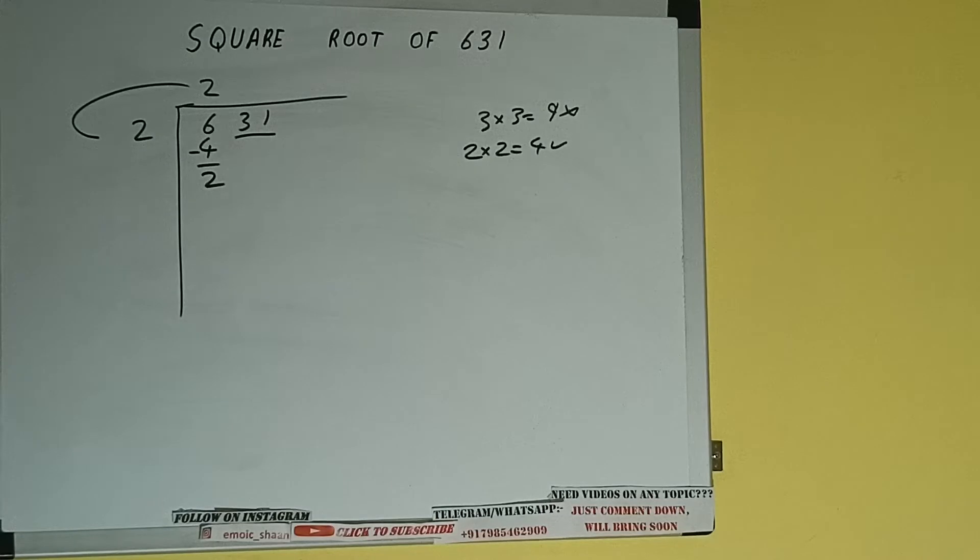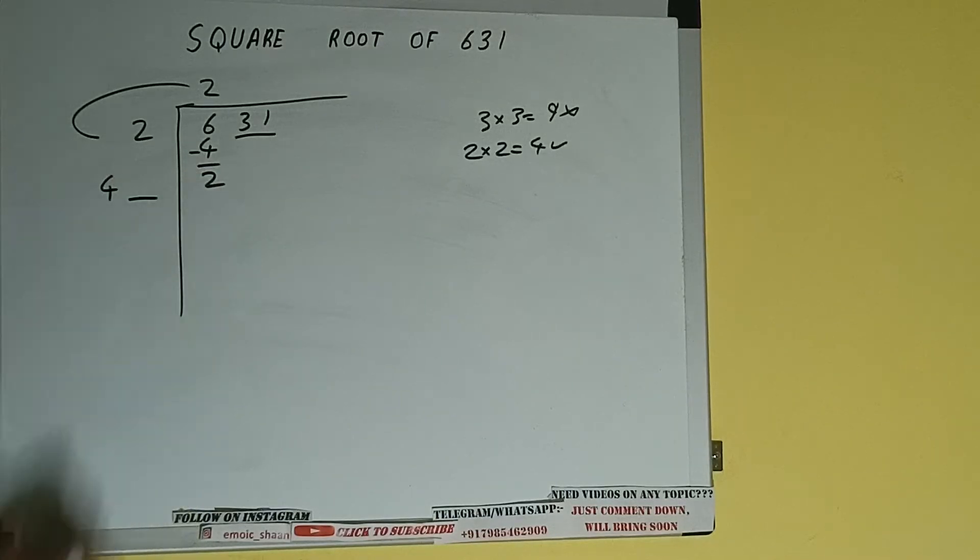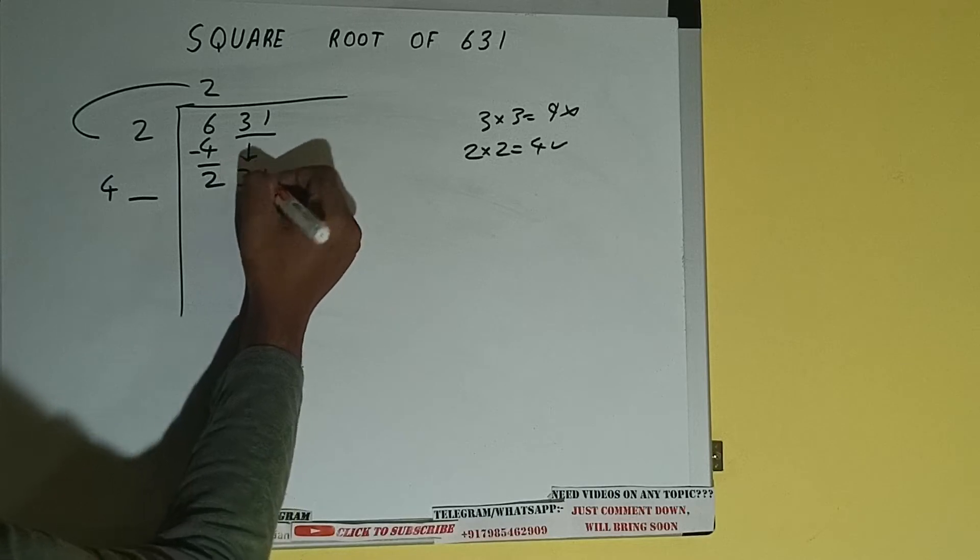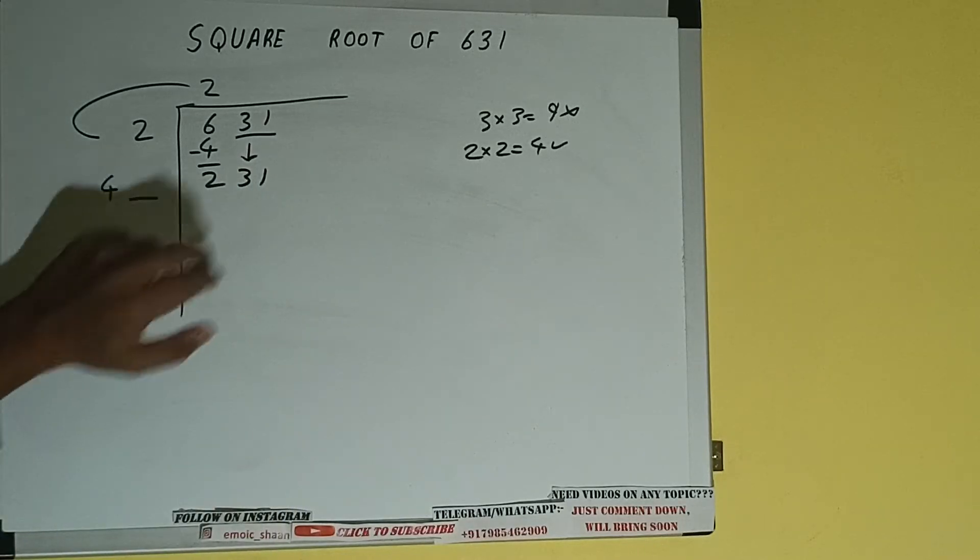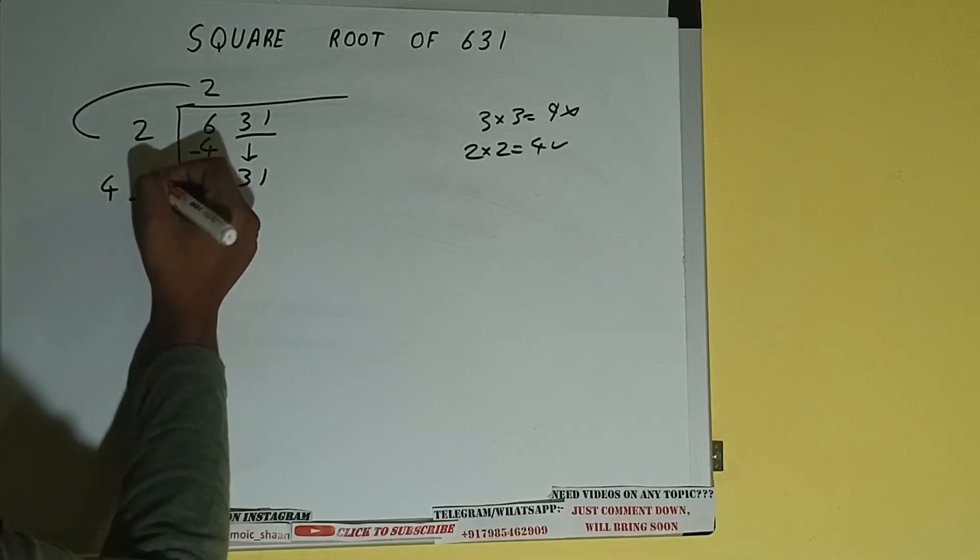We did 2 into 2, so add both, so 2 plus 2 will be 4, write it here and keep our digit extra. This number we need to make it big, so bring the next pair down and it will be 231. Now whatever number we write here we have to write here also, so if we write 5.